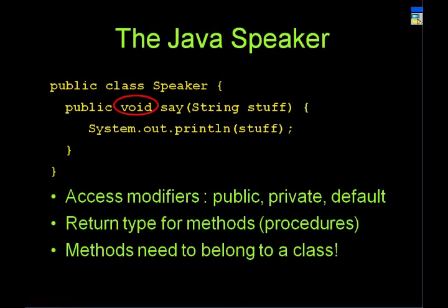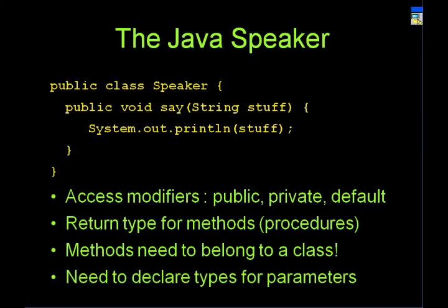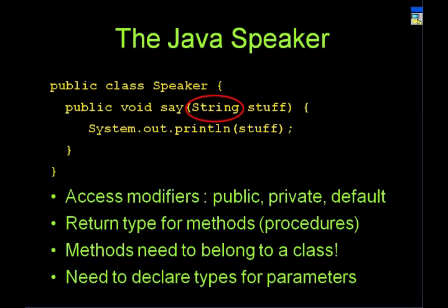All methods in Java must belong to a class — they don't exist outside. You would have separate classes for your lecturer, arrogant lecturer, food, and vending machine. You also need to declare your types for your parameters. Here you're saying the parameter 'stuff' will be a String — not an integer, not a decimal, not a boolean. You have to do this because Java is statically and strongly typed, meaning you always have to declare what kind of types your variables are.